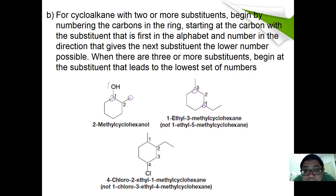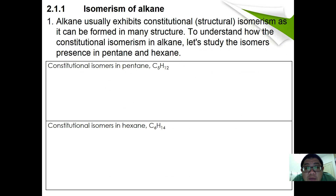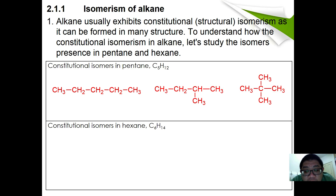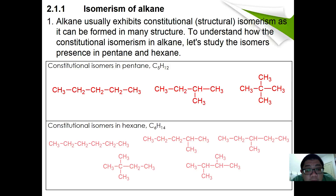Now we continue with isomerism in alkane. Alkanes can exhibit constitutional or structural isomerism since they can form many structures. To understand this, let's study the isomers of pentane and hexane. For pentane (C5H12) there are three isomers: n-pentane, 2-methylbutane, and 2,2-dimethylpropane.